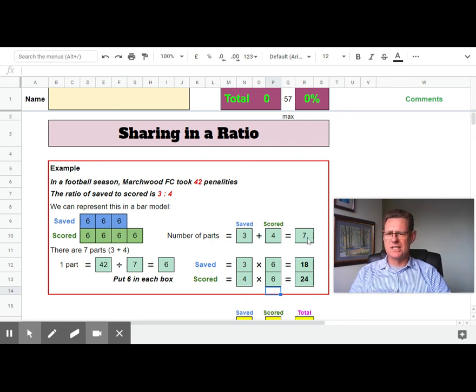Make sure you're adding the parts together first—seven parts. You're splitting the 42 penalties into seven parts, so each box represents six goals. Then we're doing three lots of six and four lots of six.